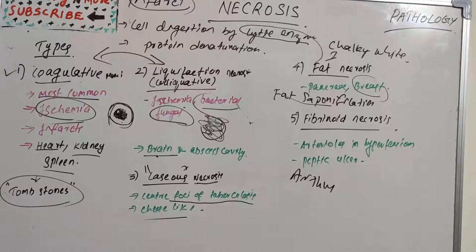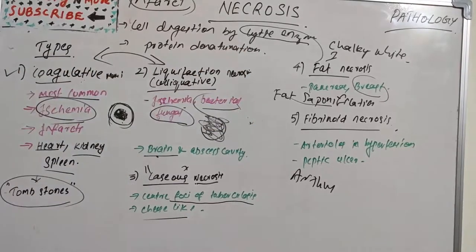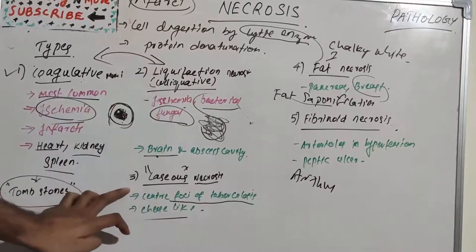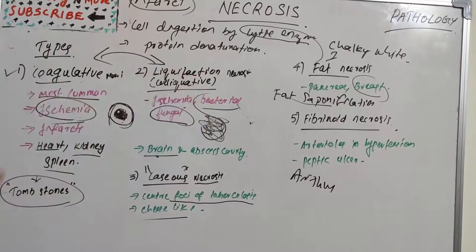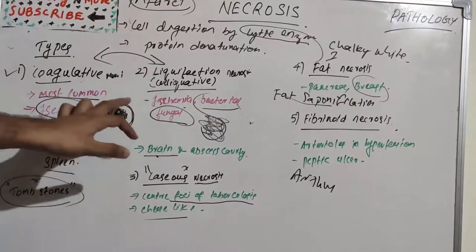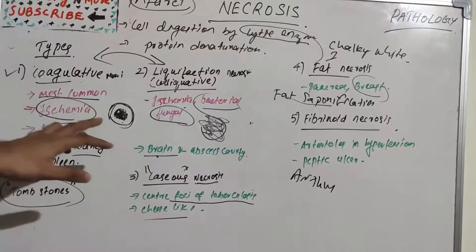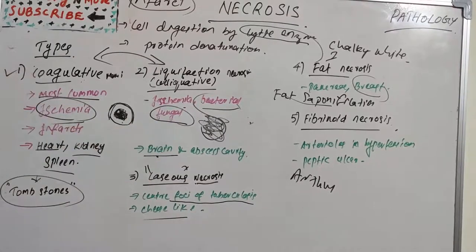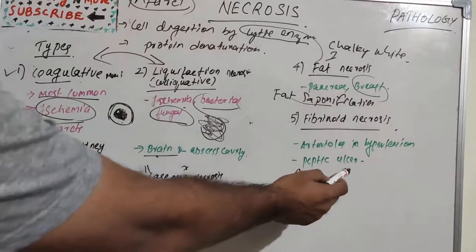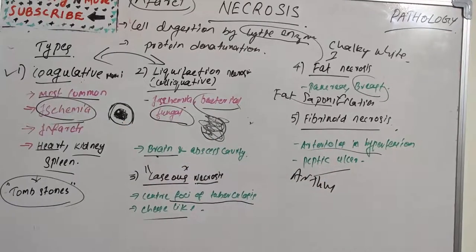To summarize, the five types of necrosis are: coagulative necrosis — the most common, where structural integrity is maintained initially because the enzymes are not active; liquefaction necrosis — where the tissue is completely destroyed becoming a liquid mass; caseous necrosis — seen in tuberculosis with a cheese-like appearance; fat necrosis — commonly seen in pancreas and breasts; and fibrinoid necrosis — seen in peptic ulcers and arterioles in hypertension.